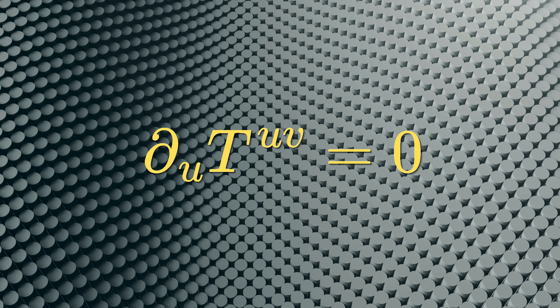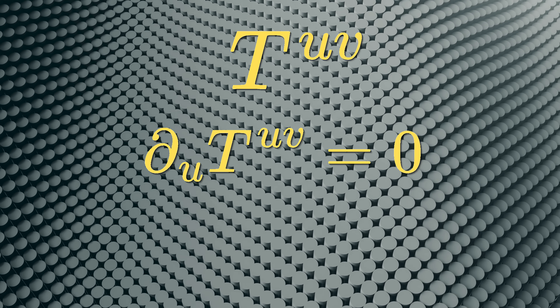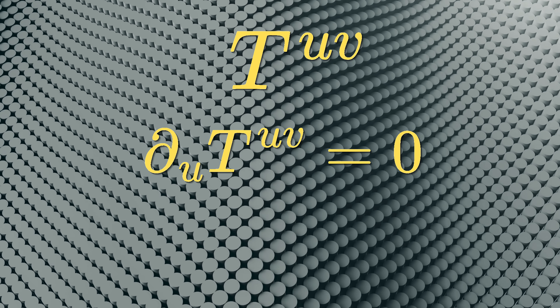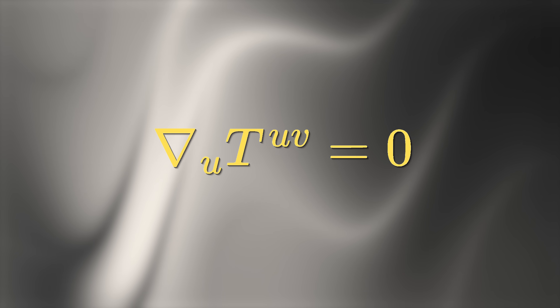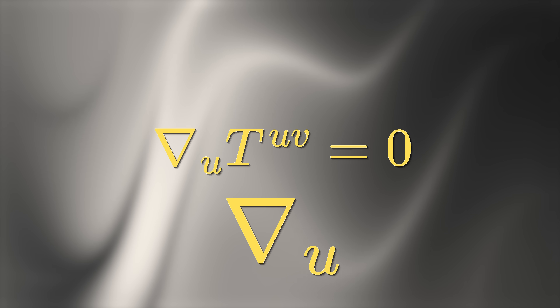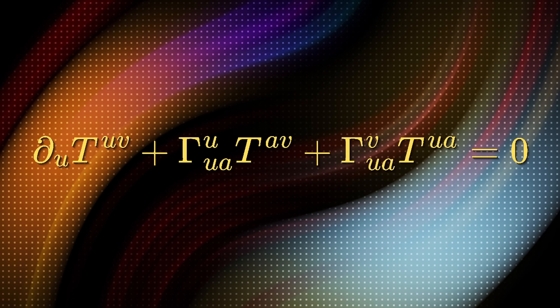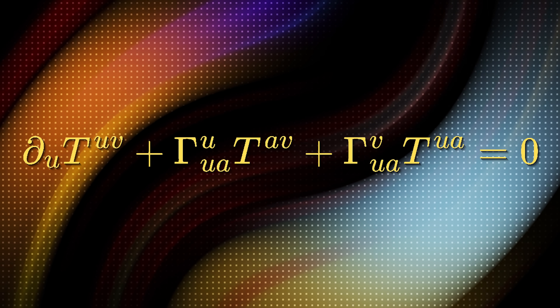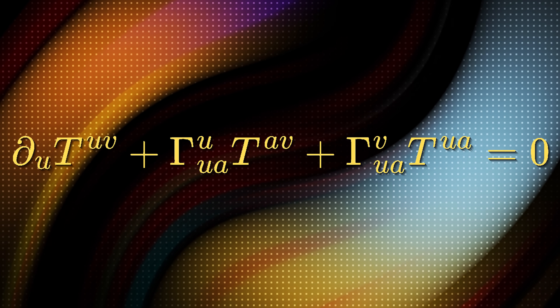In flat spacetime, energy-momentum conservation is actually quite neat — written here, where T is the stress-energy tensor of matter. In GR it looks similar; however, that upside-down triangle is what's called the covariant derivative, and that requires extra machinery — something called a connection. Expanding this formula out in coordinates gets you extra terms, like shown here.